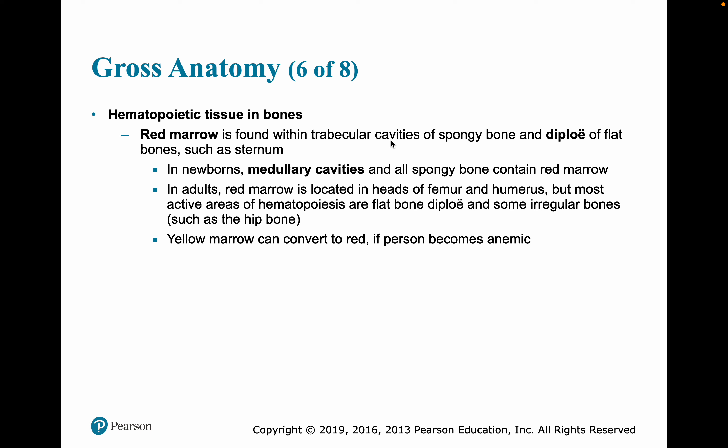The places where blood is being formed is known as hematopoietic tissue, also called red marrow, found in the trabecular cavities of spongy bones and the diploë of flat bones such as the sternum. In newborns, medullary cavities also have red marrow, but as we become adults that red marrow is replaced by yellow marrow, except in the head of the femur and humerus. Most hematopoiesis occurs in flat and irregular bones such as the hip. Yellow marrow can convert to red if a person becomes anemic.